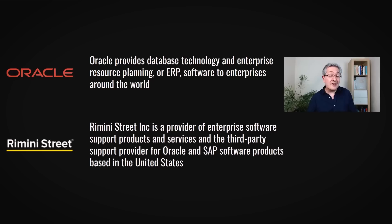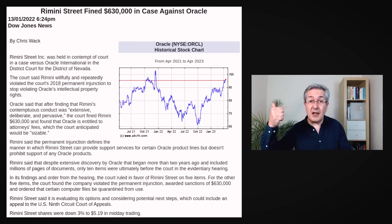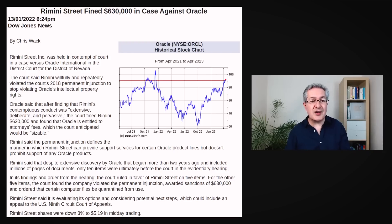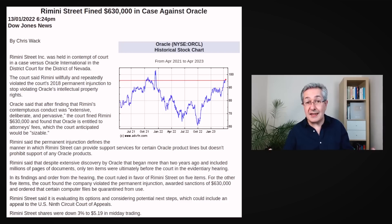It's useful to look at an example headline from the paper, looking at a story about Oracle — the database provider — and a less well-known company called Rimini Street, which provides support products and services around software from Oracle and SAP. In this example, the story concerned intellectual property which Rimini allegedly leaked to other clients, belonging to Oracle. Oracle managed to get a $630,000 fine against Rimini Street in court. Personally, I'd think that would be positive for Oracle.